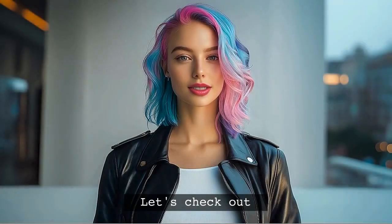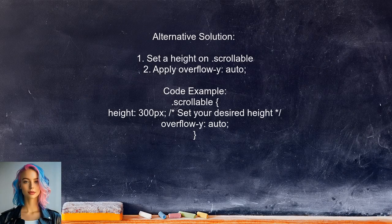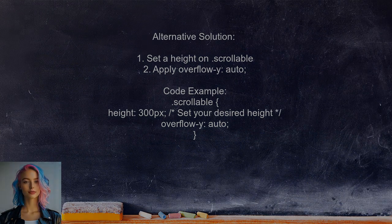Let's check out another perspective from a different user. An alternative solution suggests that to enable scrolling inside your nested flexbox, you need to set a specific height on the scrollable element. Additionally, you should apply overflow-y set to auto. This way, the content will scroll properly within the defined height.